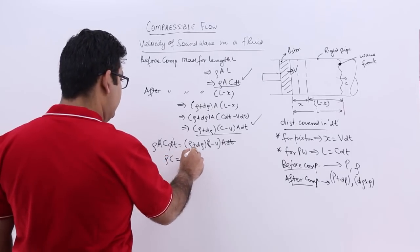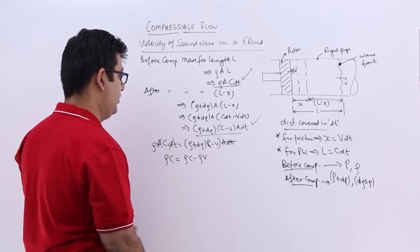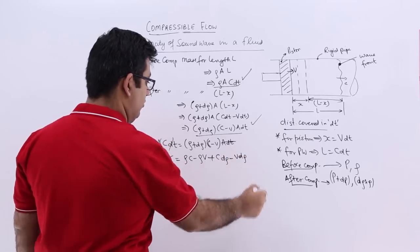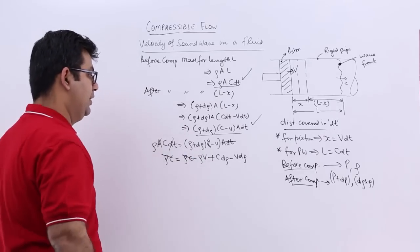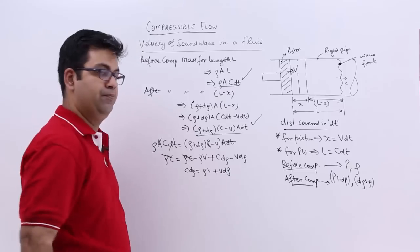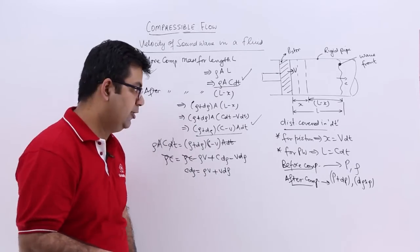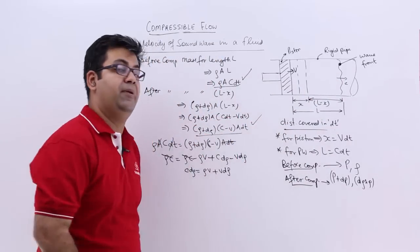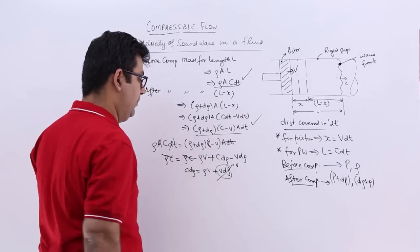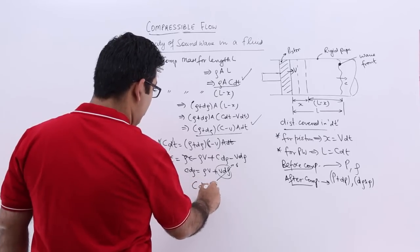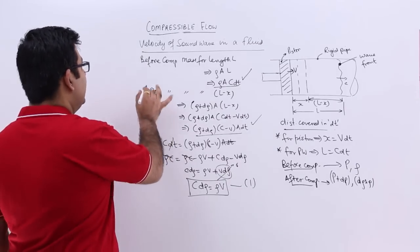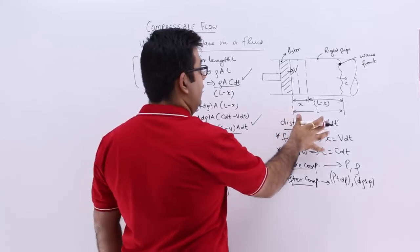By conservation of mass, the mass before and after compression must be equal, giving rho A c dt equals rho plus d rho times c minus v times A dt. Cancelling A and dt, and expanding: rho c equals rho c minus rho v plus c d rho minus v d rho. The rho c terms cancel. Since v d rho is negligibly small (both v and d rho are very small), we get c d rho equals rho v. Mark this as Equation 1.